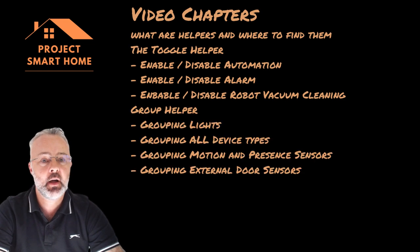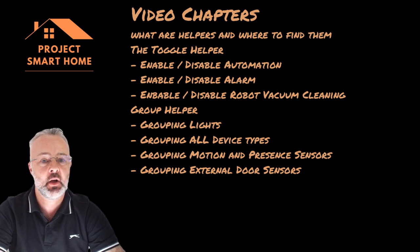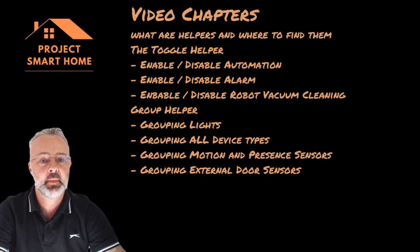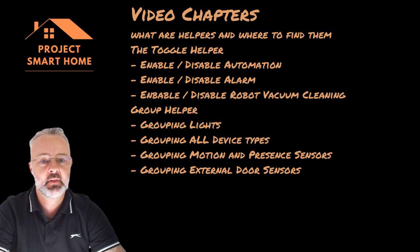The second helper I'm going to cover is the group helper. I'll show you how I'm grouping different types of devices and entities in Home Assistant such as lights, different combinations of device types, how I'm using grouping of motion detectors and presence sensors to come up with some really cool lighting automations, and how I'm using grouping for external doors - grouping all of my external doors together for automations to know when I've left things open.